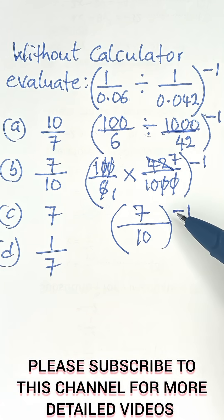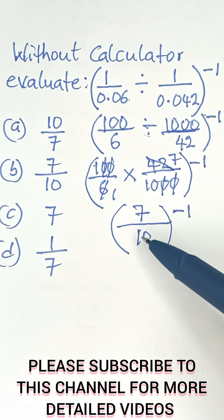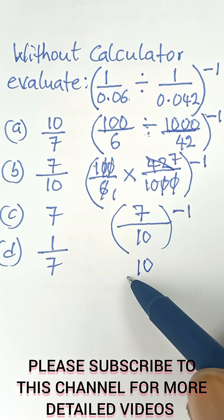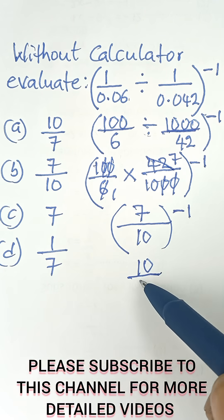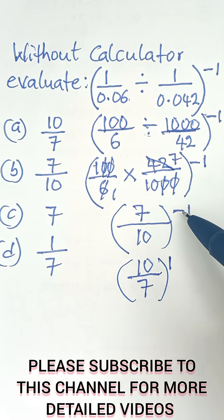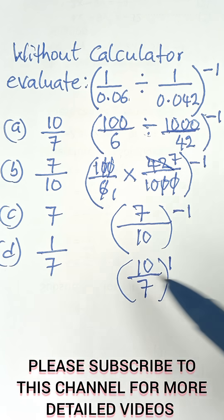Now, to make this power become positive 1, what we simply do in this bracket is to flip it. So the 10 goes up, and then the 7 comes down, and then it becomes raised to the power of positive 1. The negative sign has gone since we have inverted the fraction inside, according to indices.